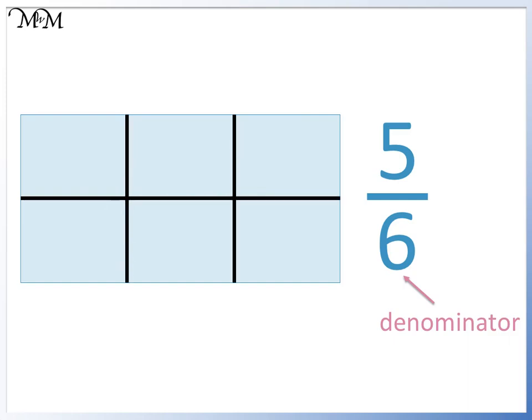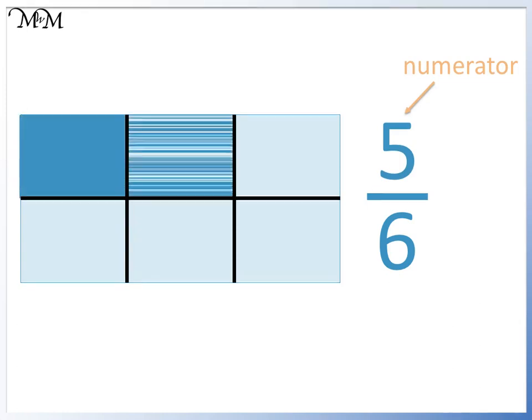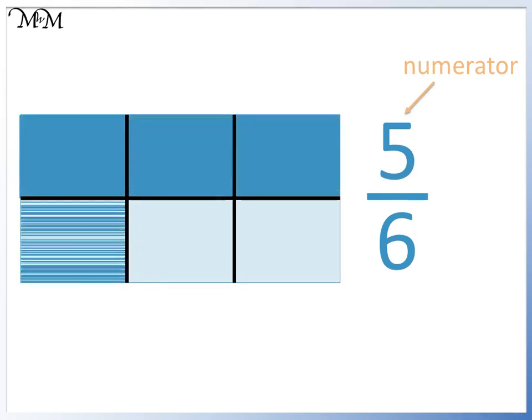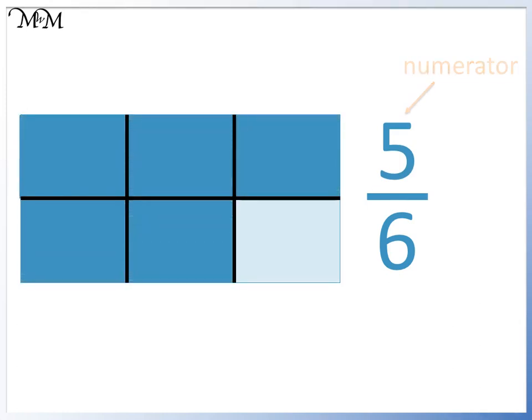The denominator is 5, so we shade in five parts. We have shaded in five parts out of six.